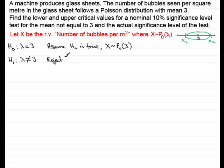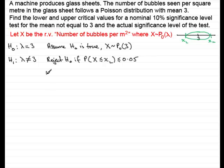We reject the null hypothesis if the probability — assuming X follows this distribution — of getting less than or equal to the lower critical value is less than or equal to half the nominal significance level, which is 5%, or 0.05. We also reject H0 if the probability that X is greater than or equal to the upper critical value is also less than or equal to 0.05.